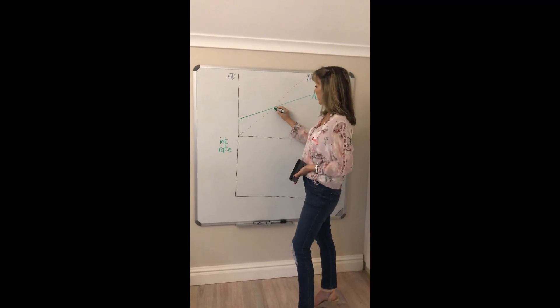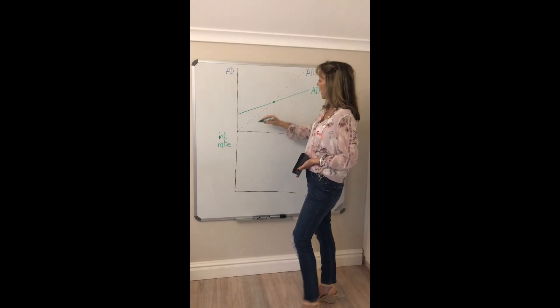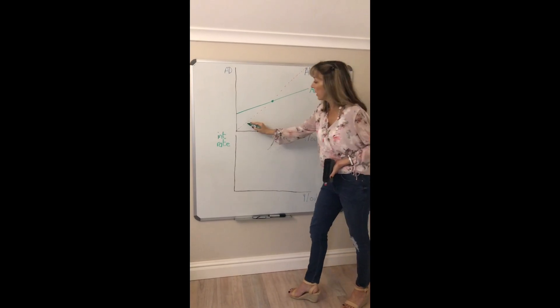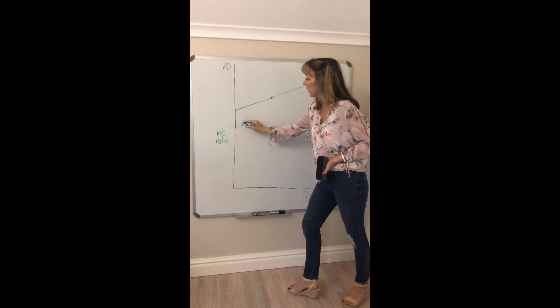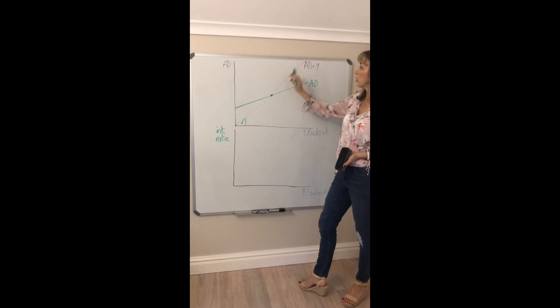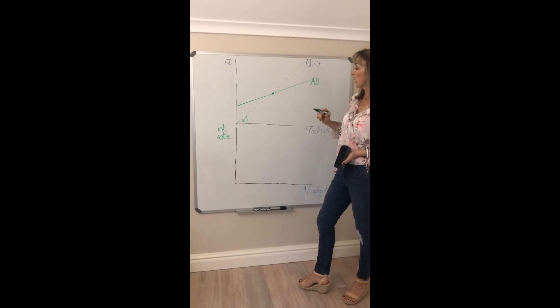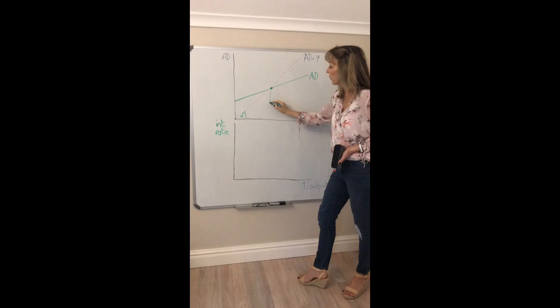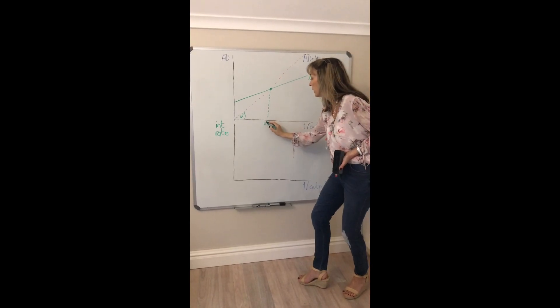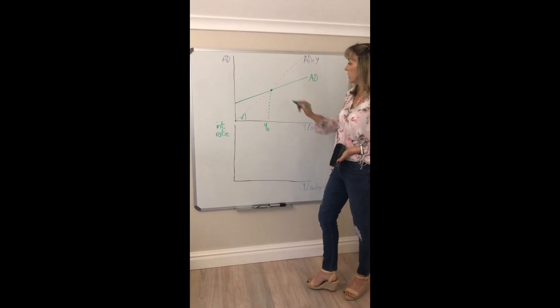So let's assume this is our initial aggregate demand curve and it intersects our 45 degree line. Remember that's a reference line, it shows you all points where aggregate demand equals income. So to start with our aggregate demand curve intersects our 45 degree line here. Let's call it Y0.